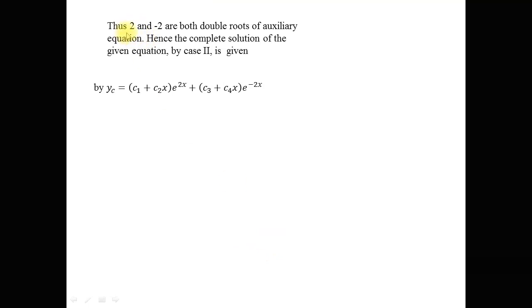Since 2 and -2 are both double roots of the auxiliary equation, the complementary solution of the given differential equation using case number 2 is: yc = (c1 + c2x)·e^(2x) + (c3 + c4x)·e^(-2x).